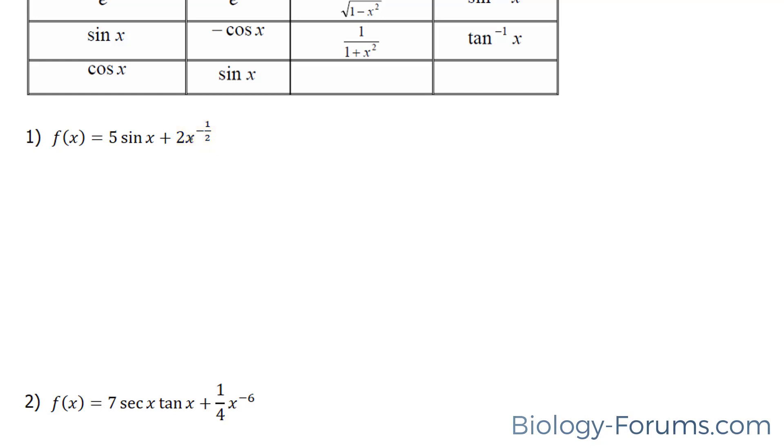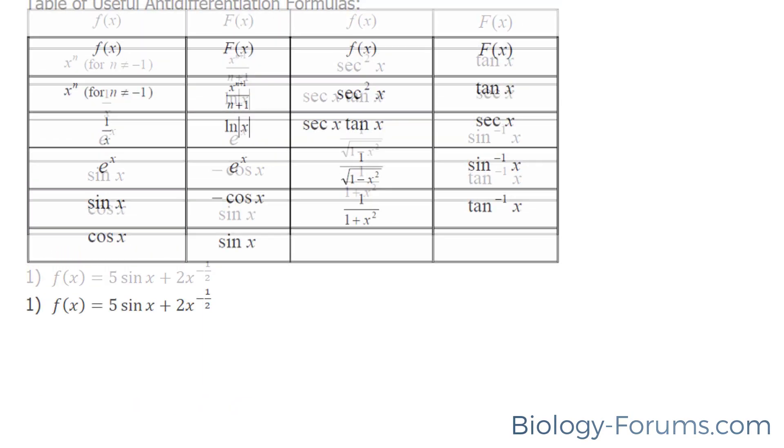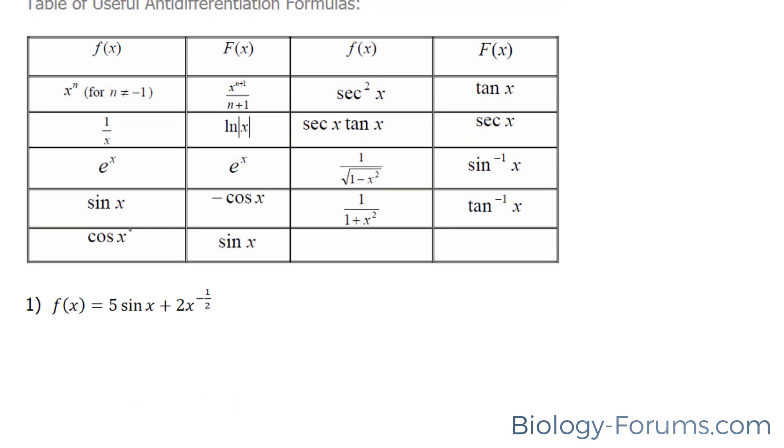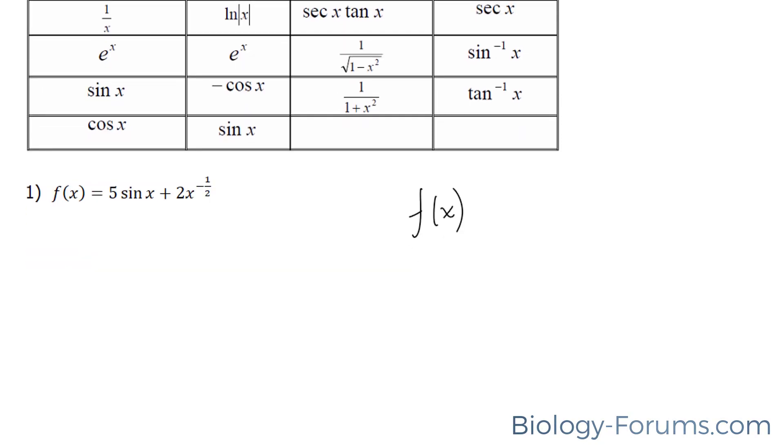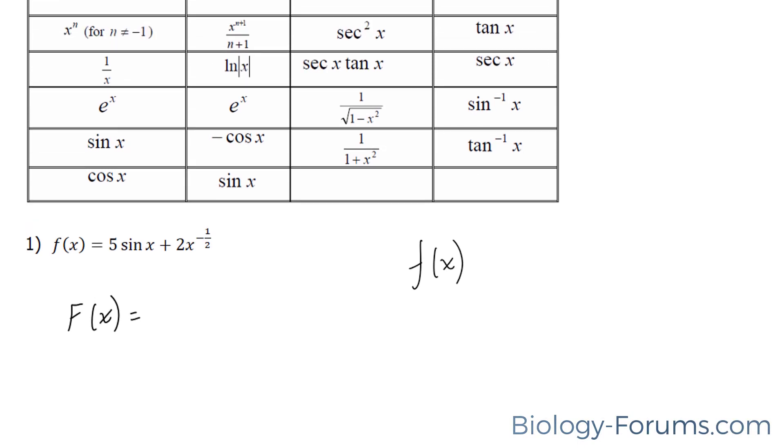For 5 sine x, you'll need to use the fact that the antiderivative of sine x is negative cosine x. Notice that all of these functions have a tiny f. That tiny f represents that this is the antiderivative, and the big F represents the function. So to find the antiderivative, we're going to use the big f. We know that the antiderivative of sine x is equal to negative cosine x.